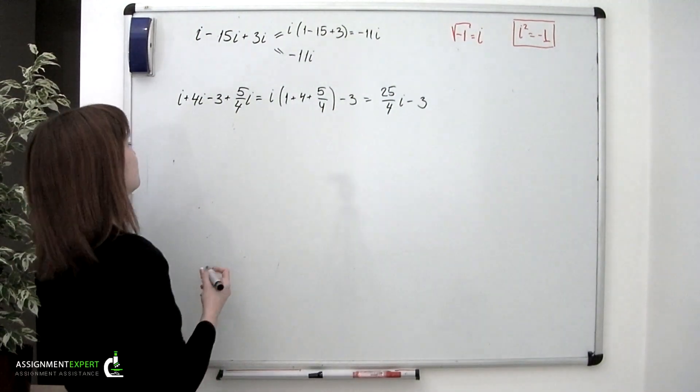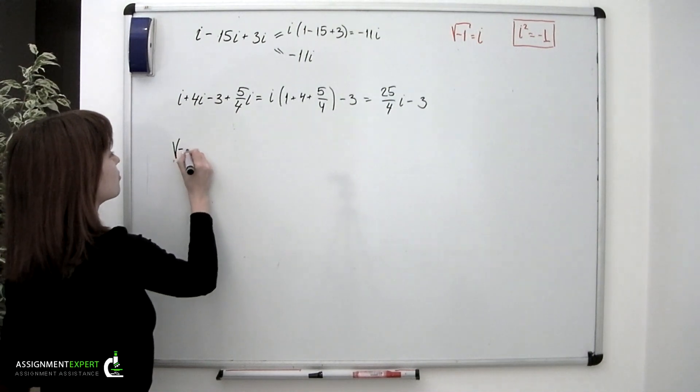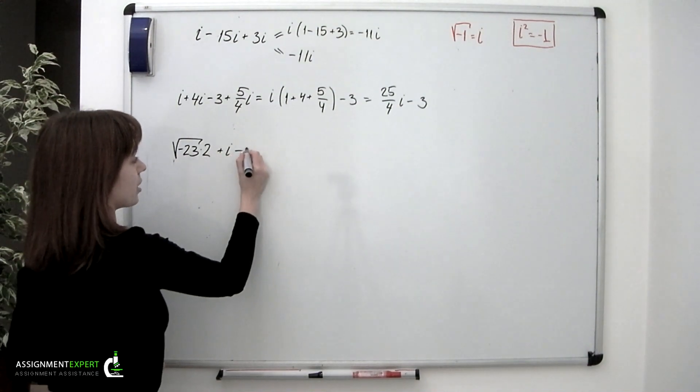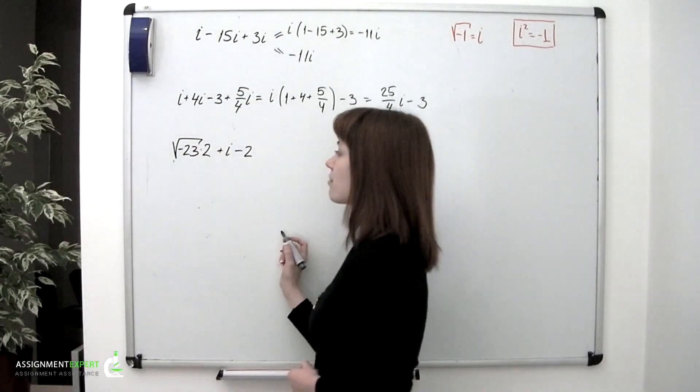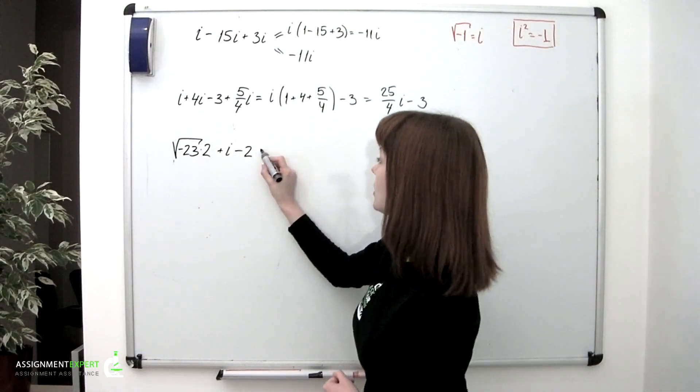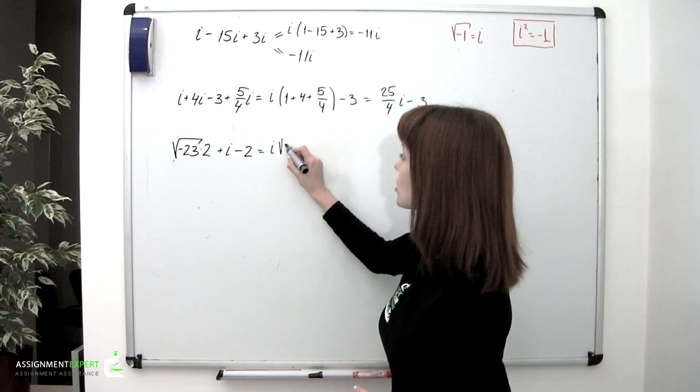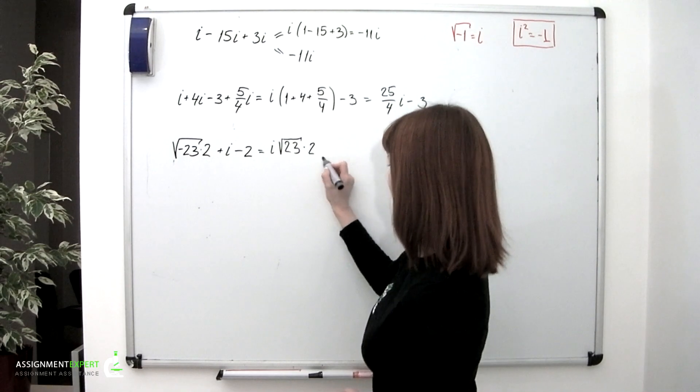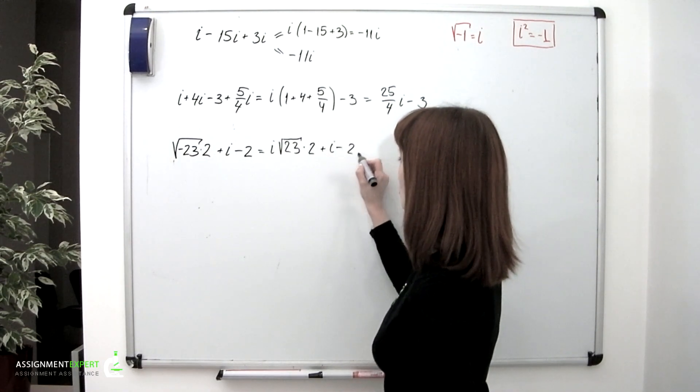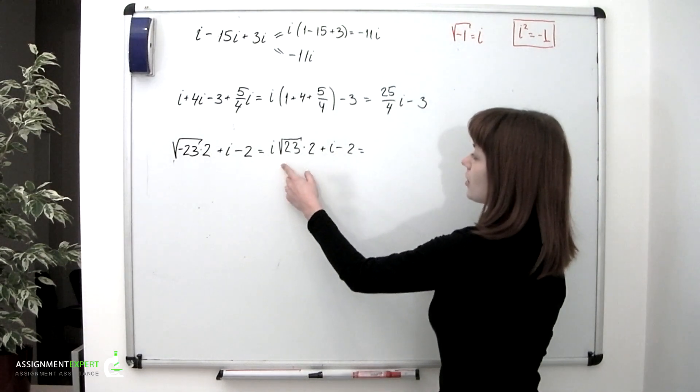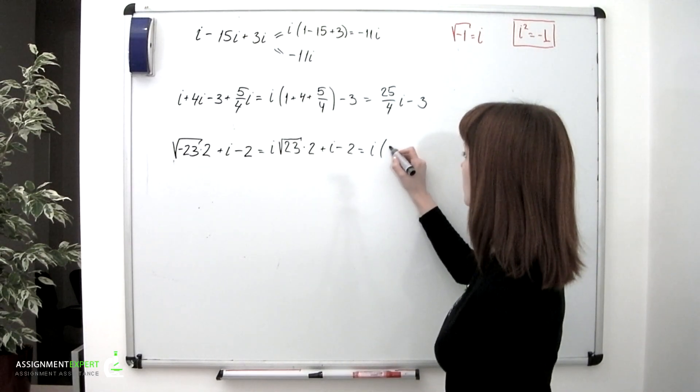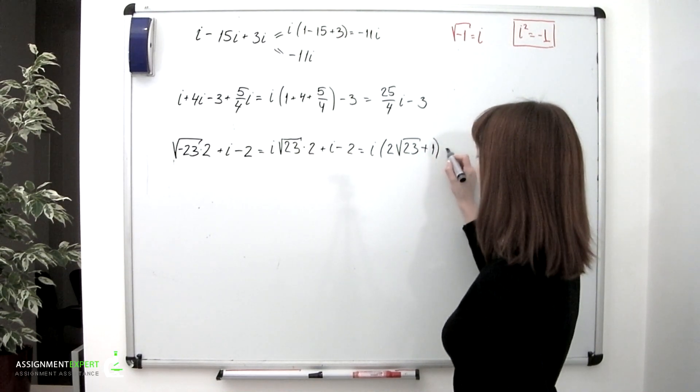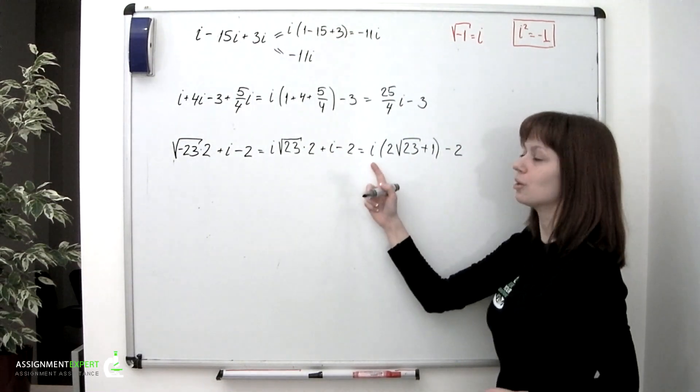Let's move on to another example. This time we'll have √-23 times 2 + i - 2. So we have square root of a negative number, and it should be replaced with i√23. And it still goes multiplied by 2, and then we have +i and -2. And again we can factor i out where we can, and have i(2√23 + 1) - 2. And again we obtained a complex number.